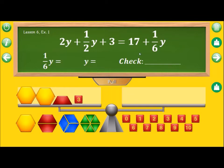On the right side, we have 17. So we need two cubes whose sum is 17. Let's take a 10 and a seven, plus a sixth of y. We see that a sixth of y is the green block.